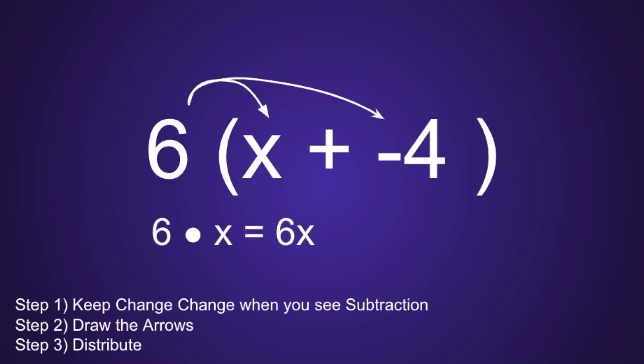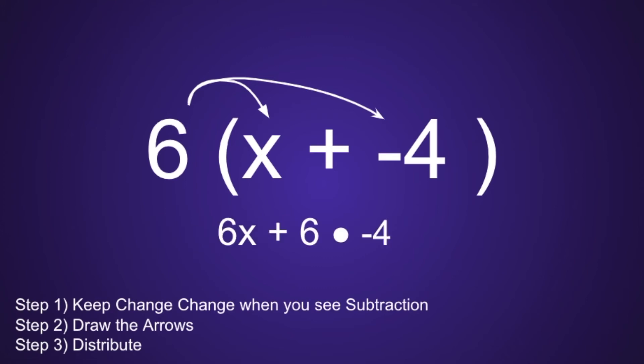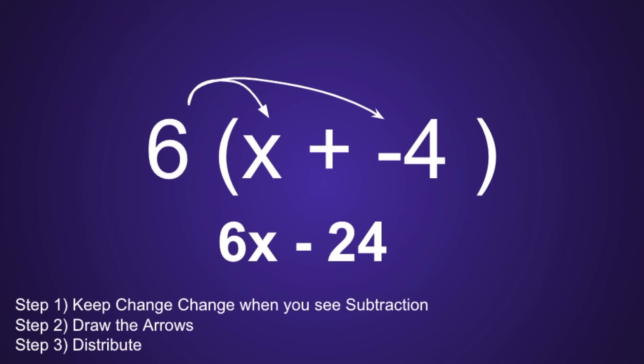6 times x is equal to 6x. And 6 times negative 4 is equal to negative 24. So we have the expression 6x plus a negative 24. But if you think about it, if you are adding a negative number, aren't you really just subtracting? If you said yes, you're exactly right. So we can do one more little step, and that is to remove that plus sign. So our final expression will be 6x minus 24.